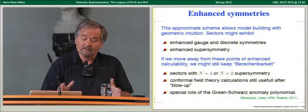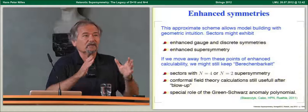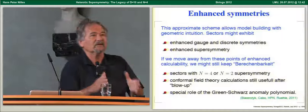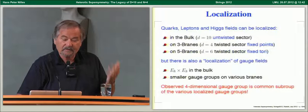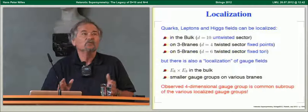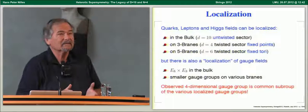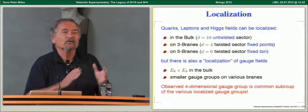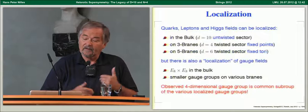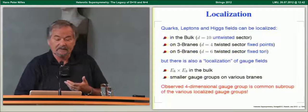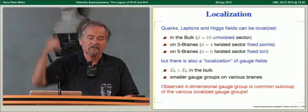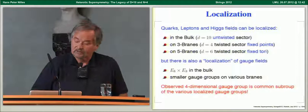We explicitly study consistent string vacua. If there is a symmetry in that theory, it is a symmetry of the full theory — it will not be broken by gravitational effects. In these heterotic orbifolds, fields can live in three possible ways: in the bulk (untwisted sector, what you already get from torus compactification), at fixed points in the extra dimensions (purely four-dimensional), or on fixed tori (fields living in six dimensions with two extra-dimensional coordinates). These correspond to different twisted sectors of the orbifold.